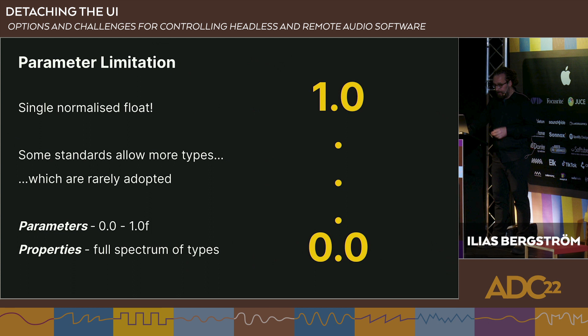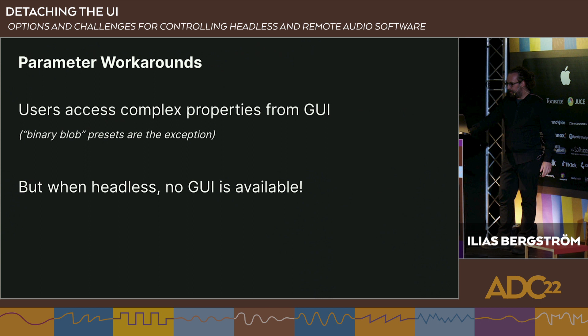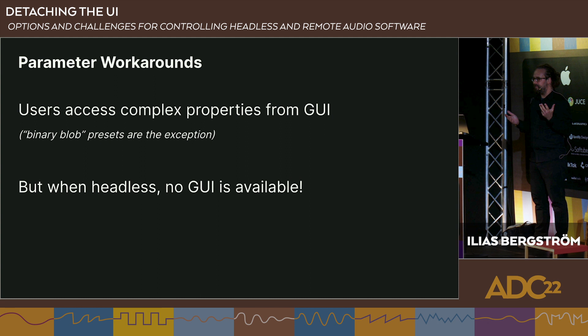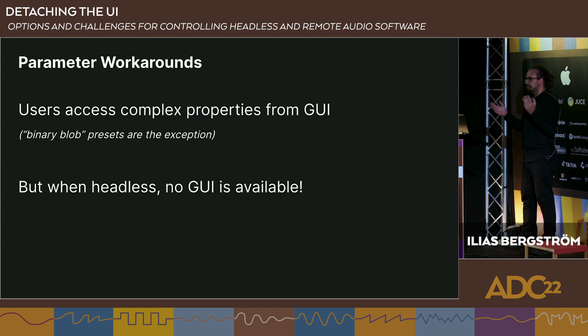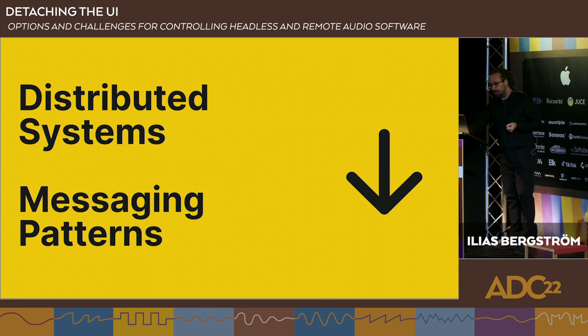We use the term 'parameters' from the VST plugin API to describe these single normalized floats, and to distinguish it from the full spectrum of possible control value types, we call the full spectrum 'properties.' The usual workaround is: since you can't do it through the plugin API, you use the GUI talking directly to your audio processor to pass values you couldn't pass normally — selections in a list, text strings, paths, etc. But when headless, there is no GUI, so you can't do that.